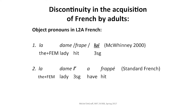And that's what you see. The contrast is between standard French, where you get the pronoun before the verb, and L2 French — a learner's French, an adult learner's French — where you get the pronoun after the verb.